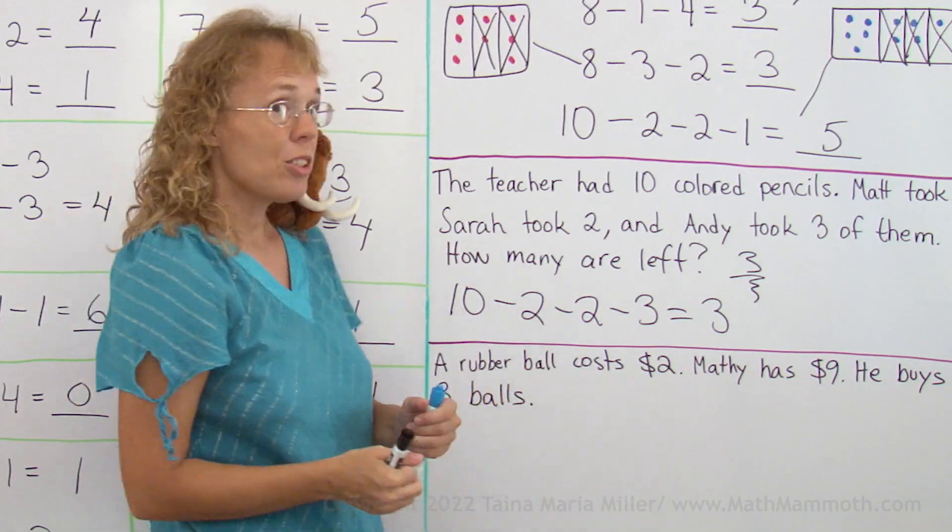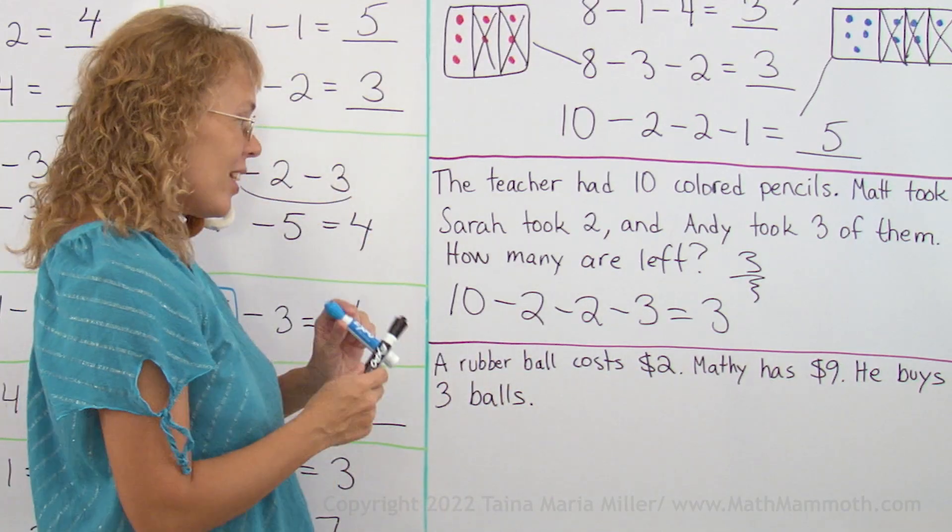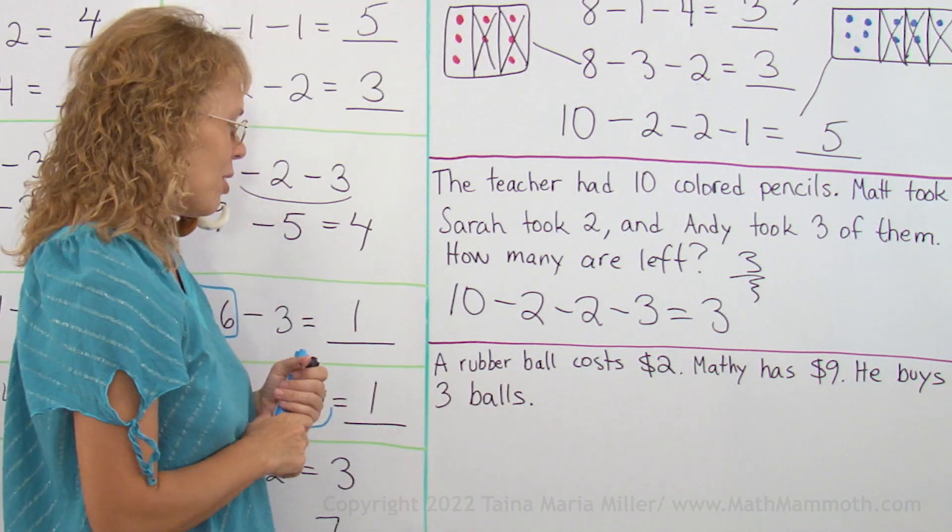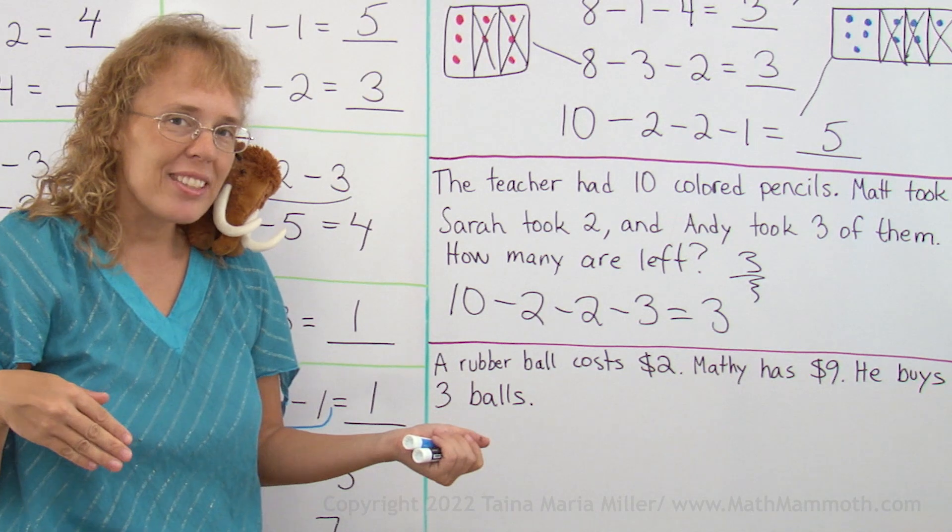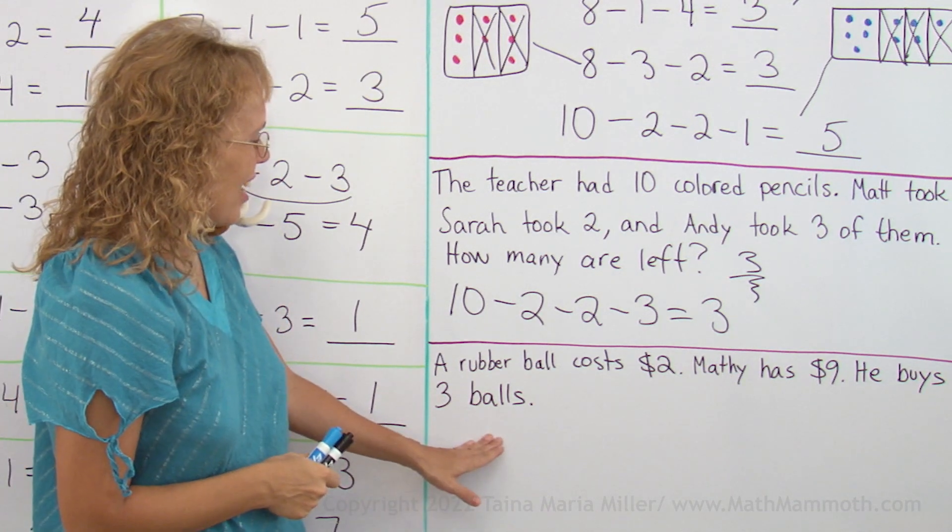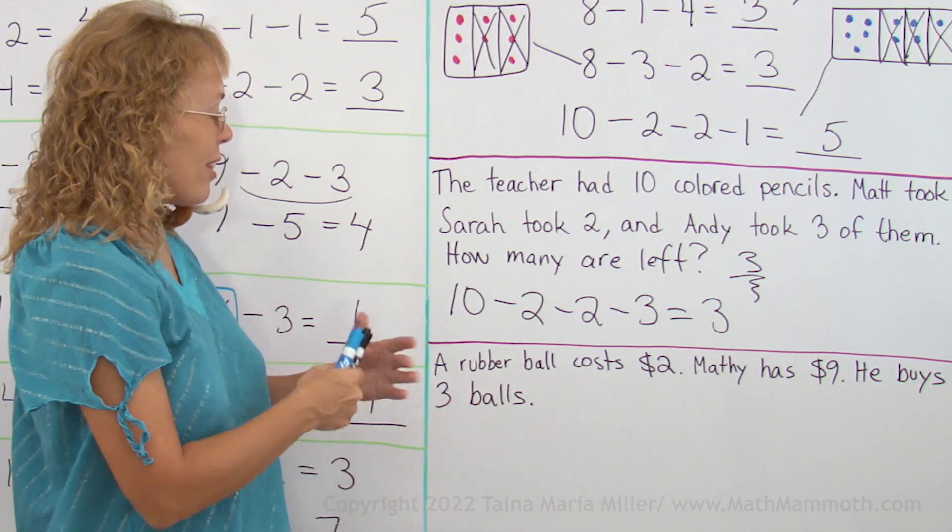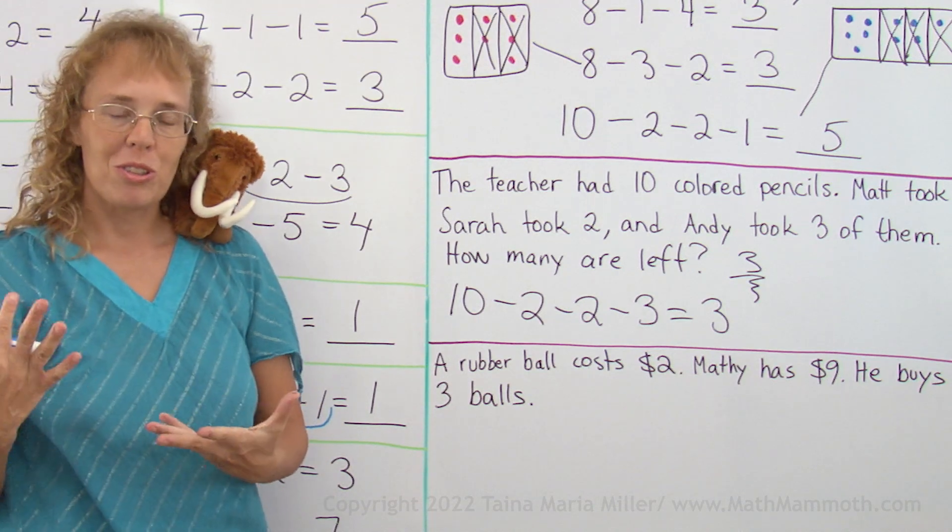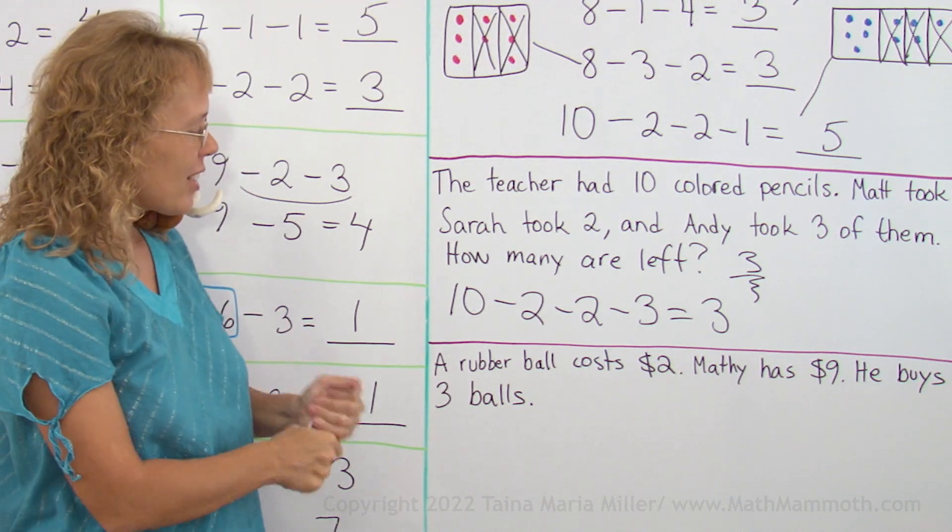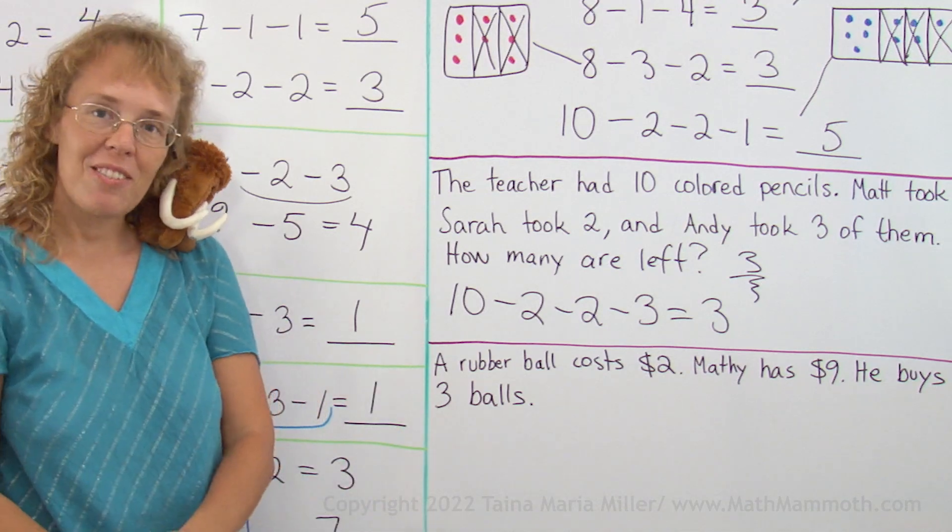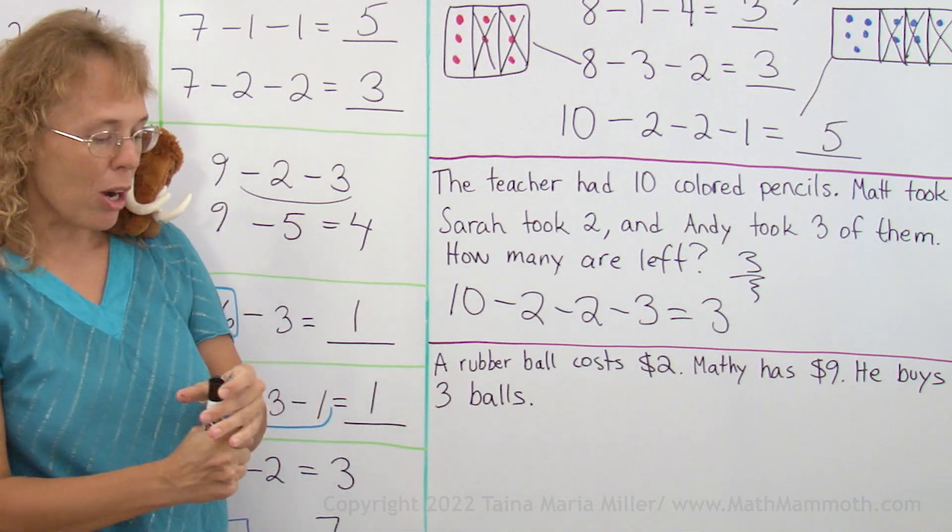And then lastly, a rubber ball cost $2, and Matthew has $9, so he buys 3 balls. What can we ask, what kind of question can we ask? We can ask, well, one thing we can ask is, how much do those 3 rubber balls cost? Another thing we could ask is, how much money will Matthew have left after he buys those balls?